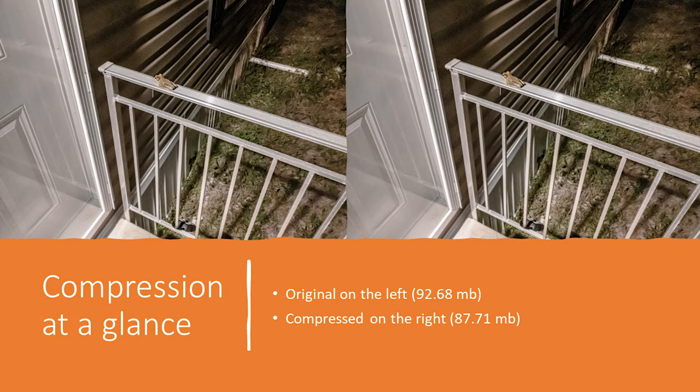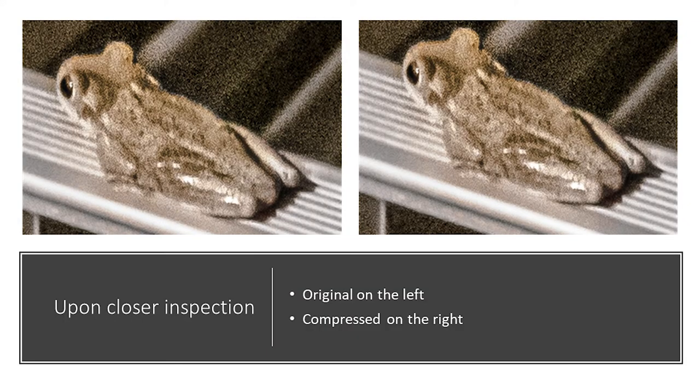As mentioned before, file formats can implement compression to reduce their file size. On this slide, you can see an uncompressed TIFF on the left and a lossless compressed TIFF on the right. The file size change is smaller compared to when you reduce dimensions or bit depth. Simultaneously, compression can have less of an impact on images themselves — here you can see there's minimal impact when examining the details of the frog up close.